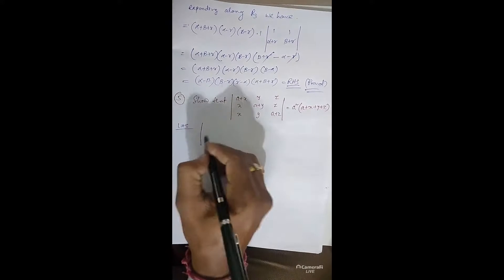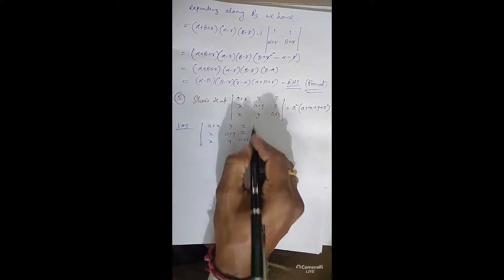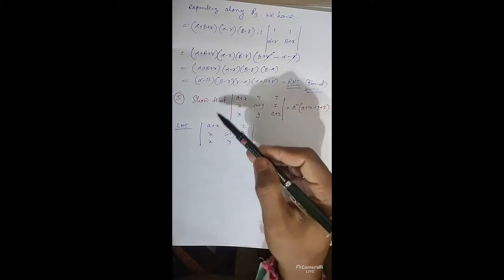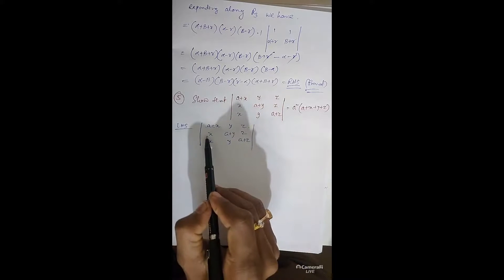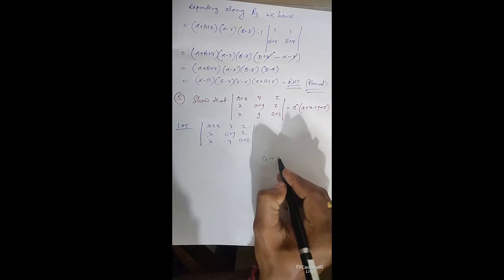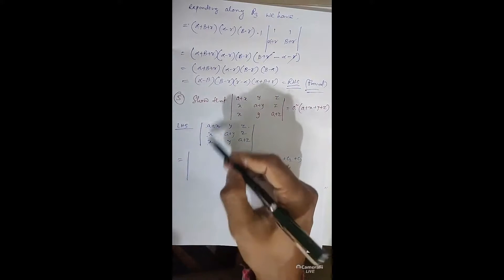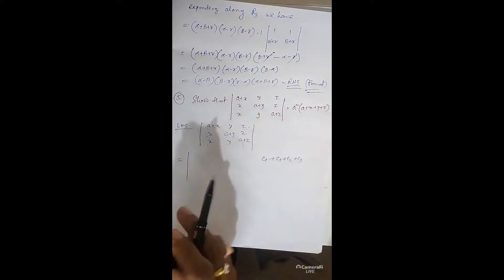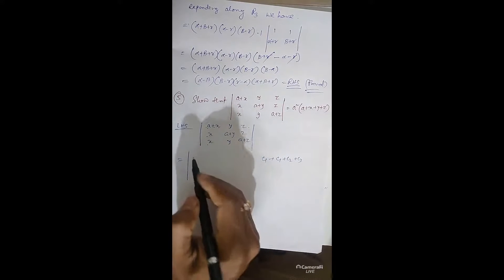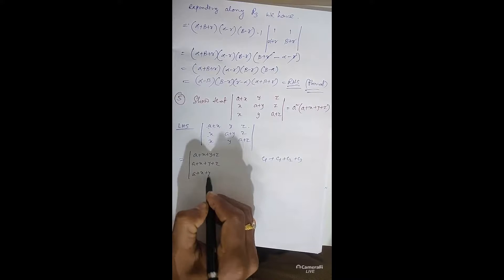LHS has the determinant. If we add the rows, elements differ (A+3X, A+3Y, A+3Z — all different, can't factor). But if we add the columns (C1+C2+C3), each row sum gives A+X+Y+Z for every row. So apply C1 changed to C1+C2+C3: all elements of C1 become A+X+Y+Z, which we can take common.